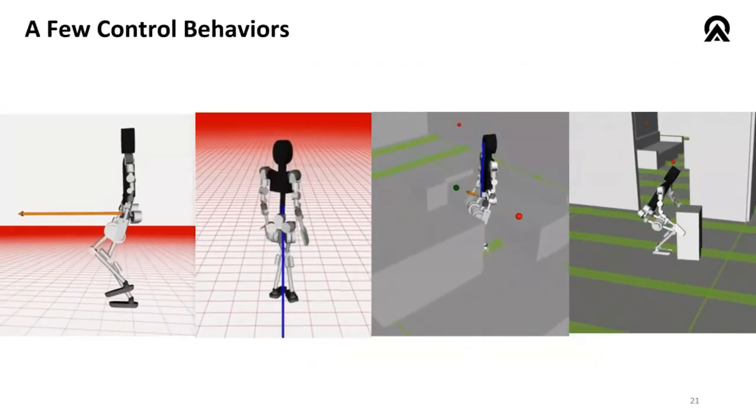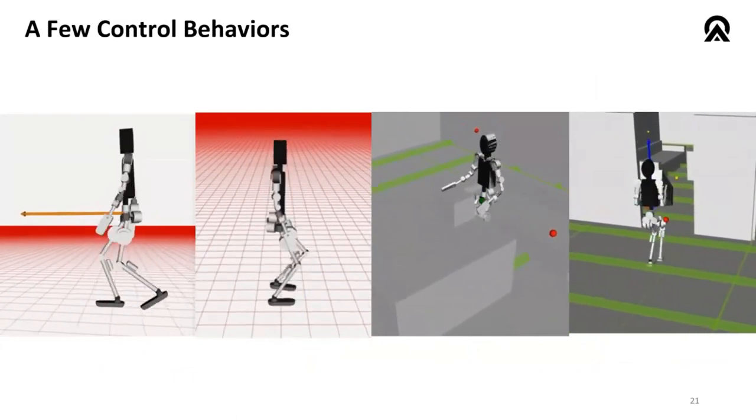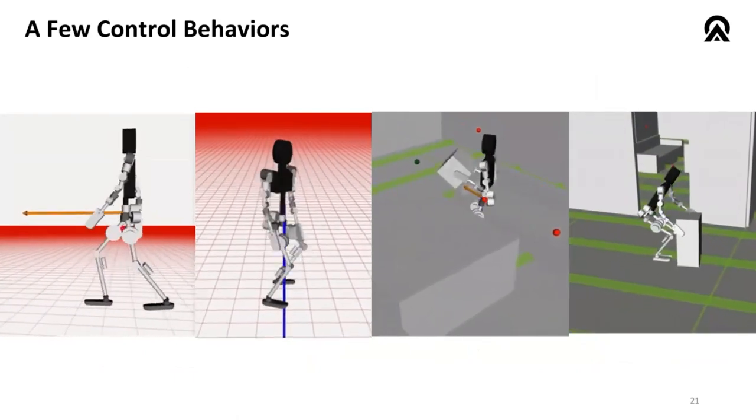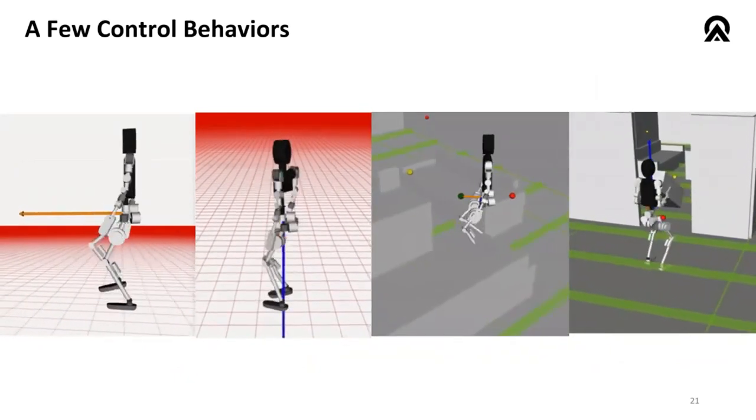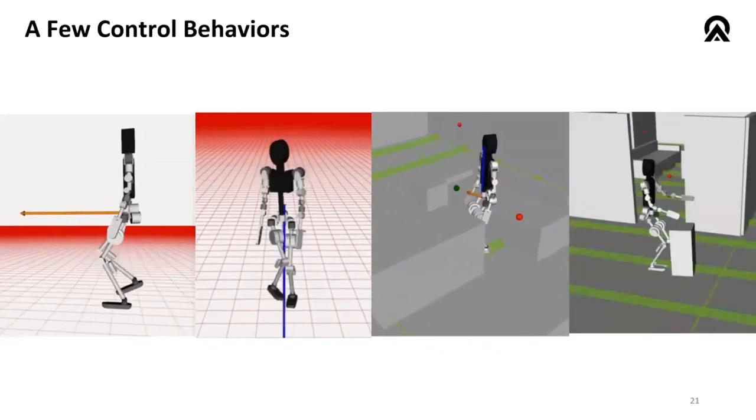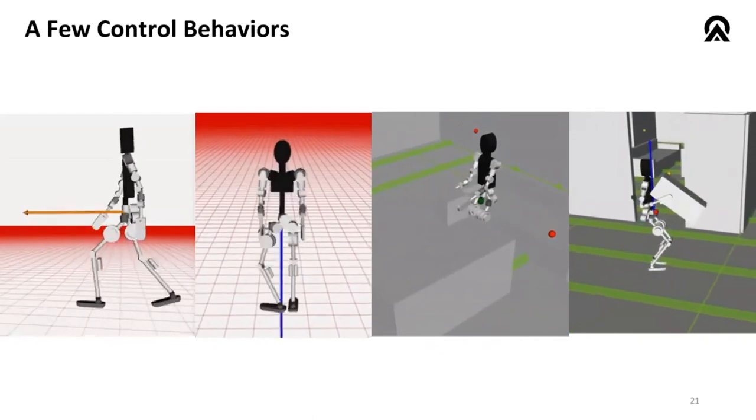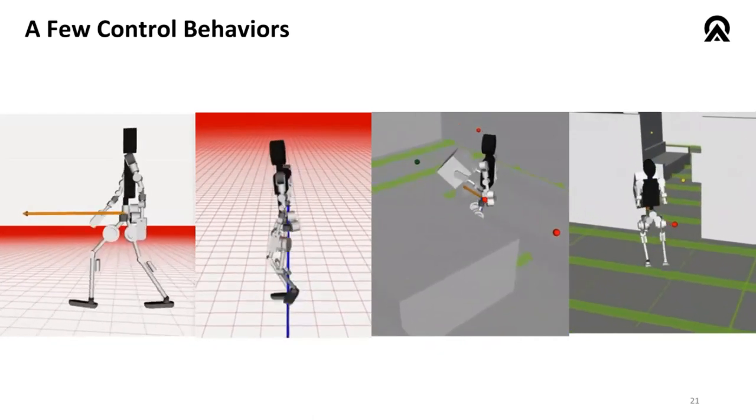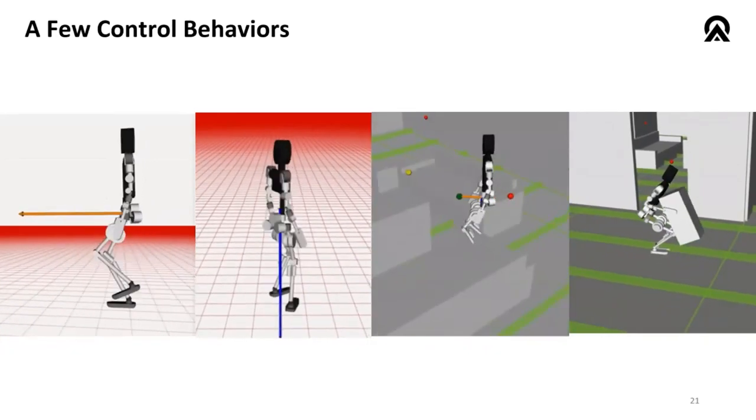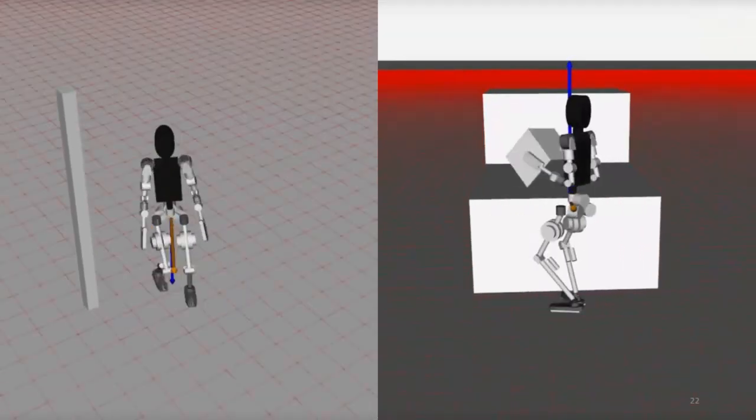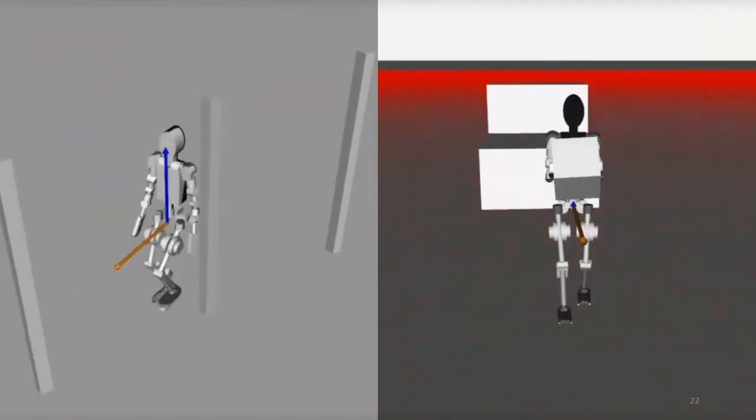So moving on to a full scale humanoid setup. These are just some basic control behaviors on the left, pretty aggressive sagittal gait. And then some high speed, pretty dynamic yaw motions. And on the right, starting to think about some basic grasping behaviors, both from table height and also from boxes that may be located down on the ground. Just a few more videos here of additional compounded behaviors.